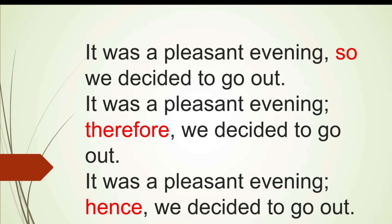Instead of conjunctions, we can express the same idea using transitive adverbs like therefore, hence, or thus. For example: 'It was a pleasant evening; therefore, we decided to go out.' Note that we put a semicolon before therefore and a comma after it. That is because therefore is a transitive adverb and, as such, it cannot connect the two clauses like conjunctions. Therefore, we put a semicolon or a full stop before it. Similarly: 'It was a pleasant evening; hence, we decided to go out.' Here also, we put a semicolon before hence and a comma after it.